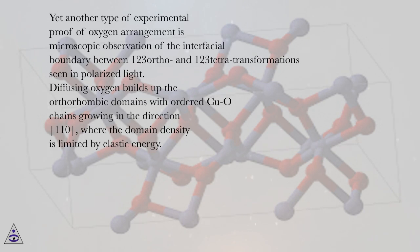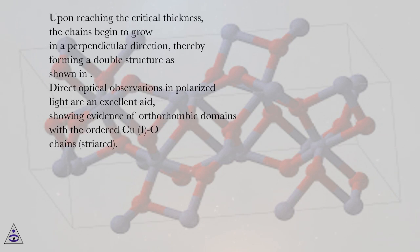Diffusing oxygen builds up the orthorhombic domains with ordered CuO chains growing in the direction |110|, where the domain density is limited by elastic energy. Upon reaching the critical thickness, the chains begin to grow in a perpendicular direction.